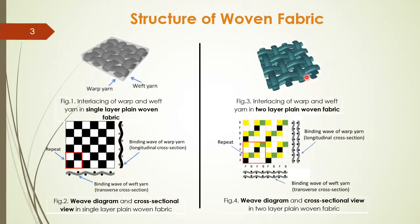Similarly, we have the shape of a two layer plain woven fabric and its weave representation, and the binding wave of weft yarn along the transverse cross section and along the longitudinal cross section.